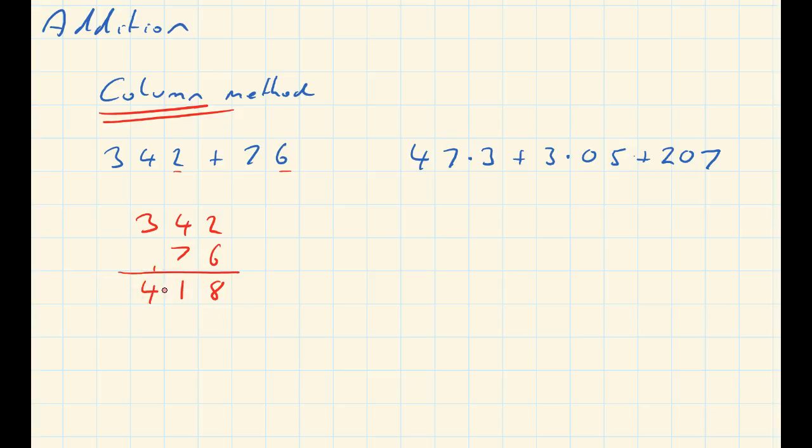So if I've got 47.3, that point determines exactly where the units are. The units must go in this one here, so put the point in there. I've got 3.05, and 207, that would be 207 point there. Add them all up.